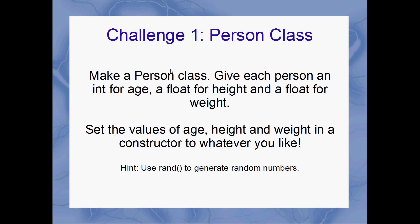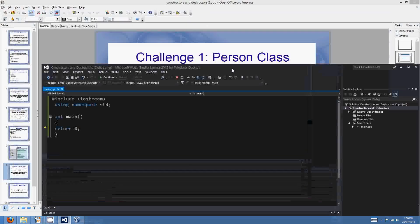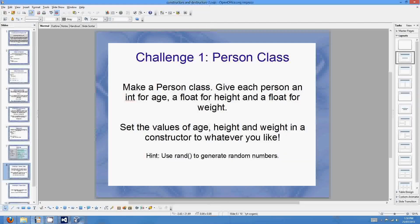On to some challenges. These are a little contrived, but hopefully they're helpful for using constructors and destructors. Challenge one: make a Person class. Give each person an int for age, a float for height, and a float for weight. Set the values for age, height, and weight in a constructor — it doesn't matter what you set them to. I'm going to use `rand` to generate random values.